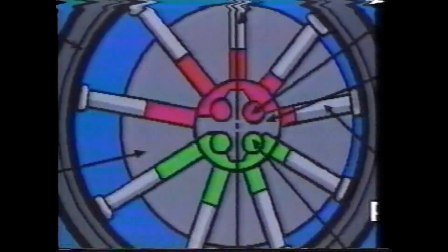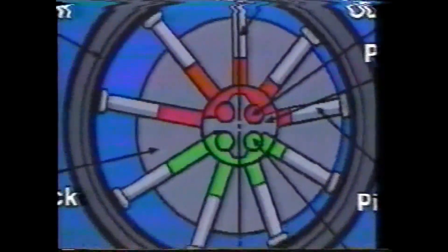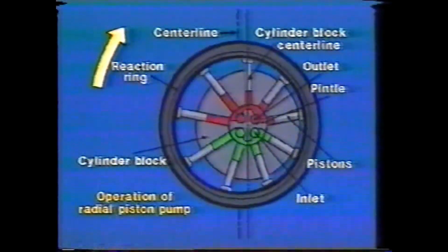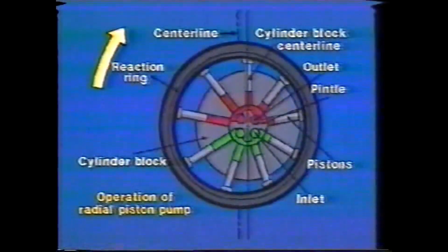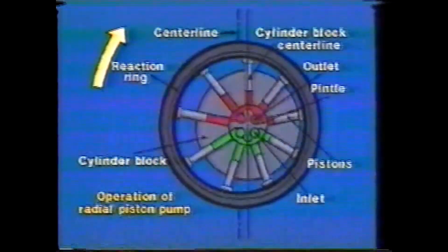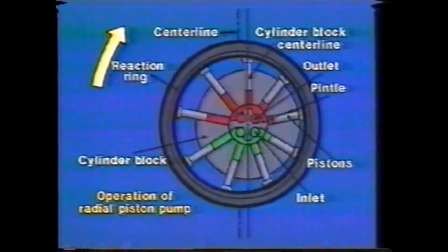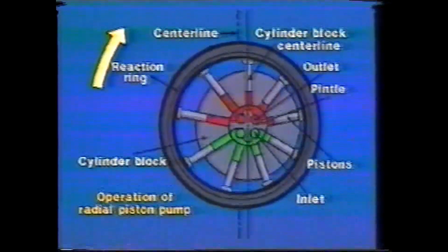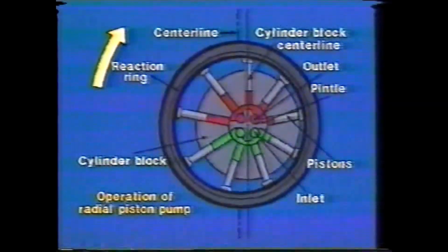A radial pump has pistons which reciprocate radially in a cylinder block that rotates on a stationary pintle, and inside a circular reaction ring. Some force, usually charging pressure and/or springs, holds the pistons out against the inner contour of the ring. With the ring offset from the center line of the cylinder block, the pistons reciprocate in their bores, taking in and expelling fluid through porting in the pintle. Moving the reaction ring will change the length of piston travel, thereby varying the pump displacement and output flow.